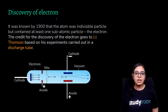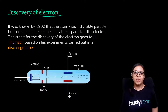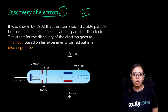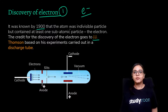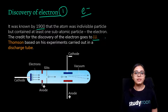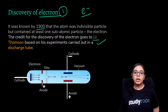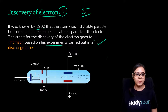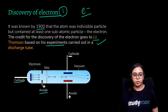Let's begin by understanding the first subatomic particle: the electron. Electrons are negatively charged. Who discovered electrons? JJ Thomson, in 1900, was the first to discover electrons. By 1900, it was known that the atom was not an indivisible particle but contained at least one subatomic particle — the electron. What he did in his experiment was take a cathode and an anode — charged electrodes capable of conducting electricity.